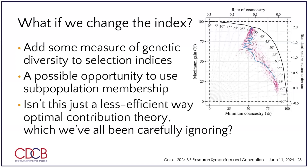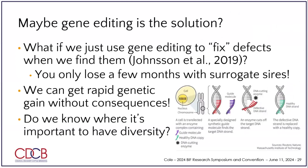We've all been ignoring optimal contribution selection because only Europeans do that — because why? We want to slow down the rate of genetic gain, and that's what you have to do. You can't get both — you can't get more diversity and more genetic gain. You've got to pick one.